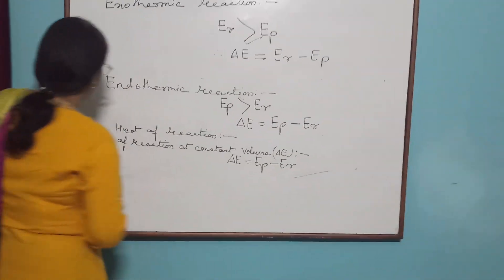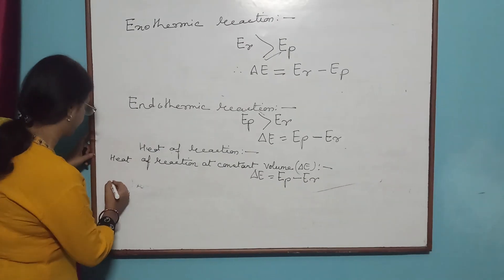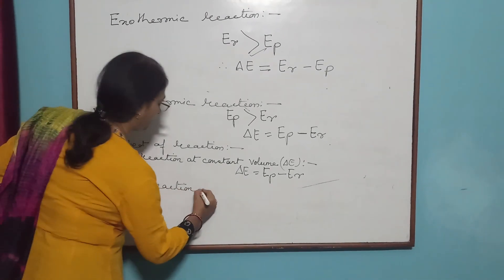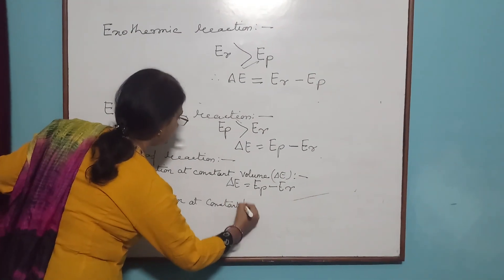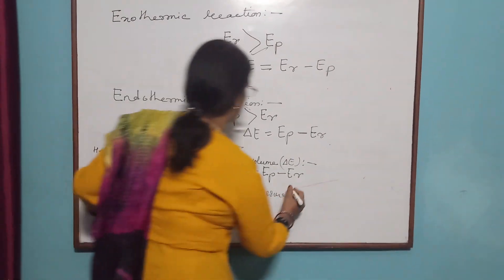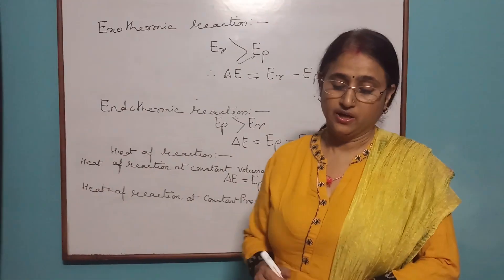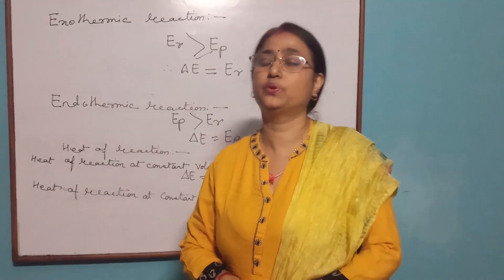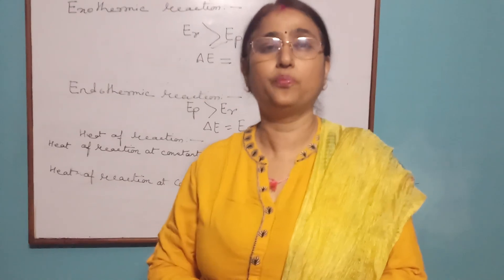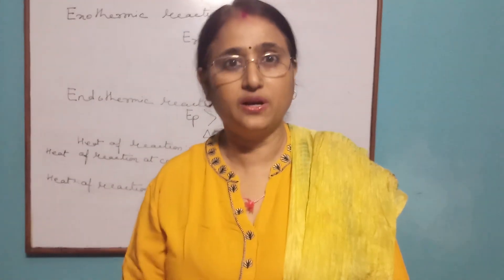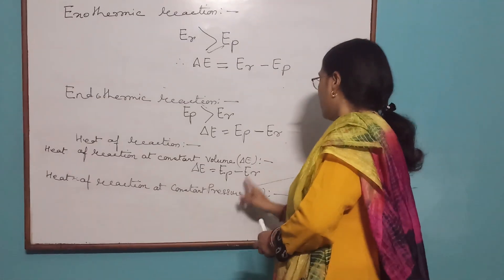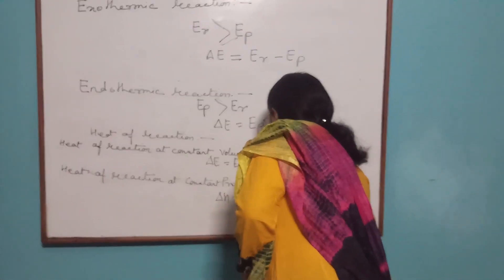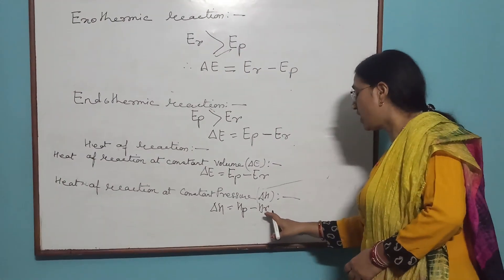The other form is heat of reaction at constant pressure, denoted by del H. At a given temperature, the heat of reaction at constant pressure is equal to the difference in enthalpy of product and enthalpy of reactant, as specified by a balanced chemical equation. That means del H = HP minus HR, where HP is the enthalpy of product and HR is the enthalpy of reactant.